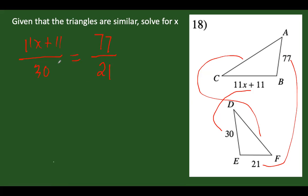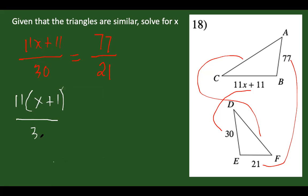Let's make it simpler. Some of you might do cross multiplication right away, but it's better to do cancellation first before cross multiplication because it keeps your numbers smaller. I can simplify by factoring out 11 from the numerator: 11 times (x plus 1). And 77 over 21 can be written as 11 times 7 over 3 times 7.